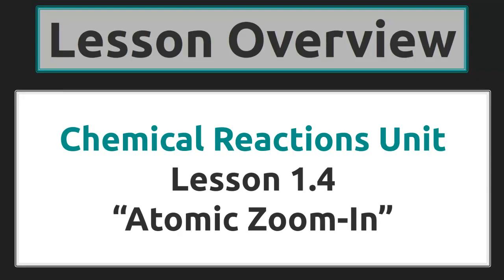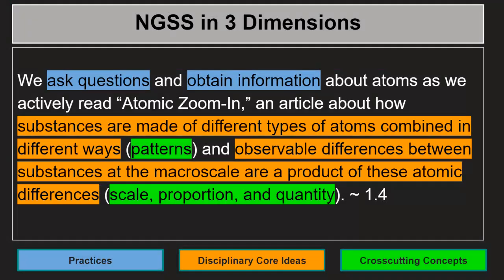Lesson Overview for Chemical Reactions Unit, Lesson 1.4: Atomic Zoom In. In this lesson, we ask questions and obtain information about atoms as we actively read Atomic Zoom In, an article about how substances are made of different types of atoms combined in different ways.